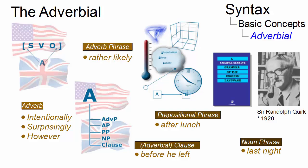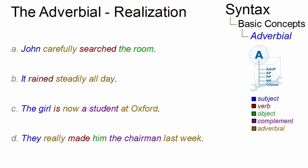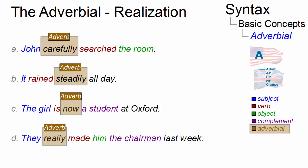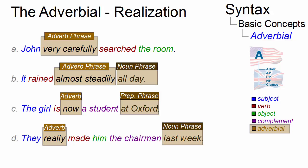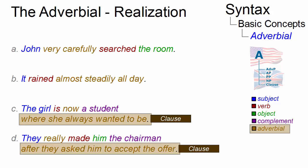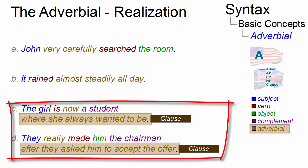Adverbials can be realized by several syntactic categories. Take these four sentences as examples. The adverbial can be realized by means of simple adverbs like carefully, steadily, now, or really, or in terms of adverb phrases like very carefully and almost steadily in examples A and B, as prepositional phrases like at Oxford in sentence C, or as noun phrases like all day and last week in sentences B and D. And then of course there are adverbial clauses, as seen in the modified versions of sentences C and D.